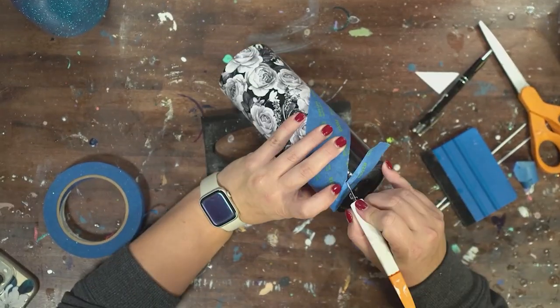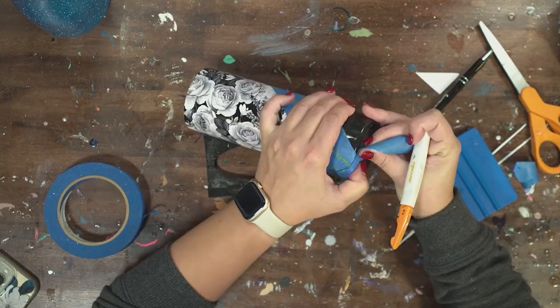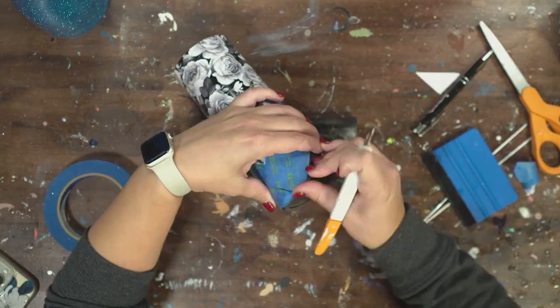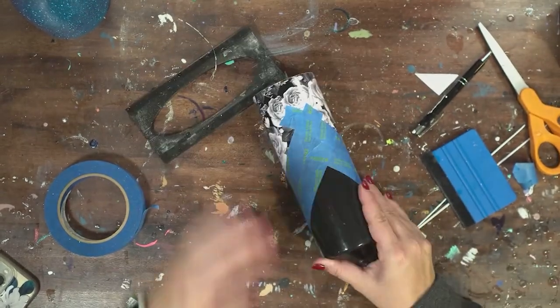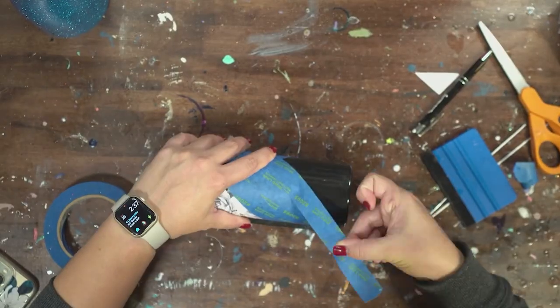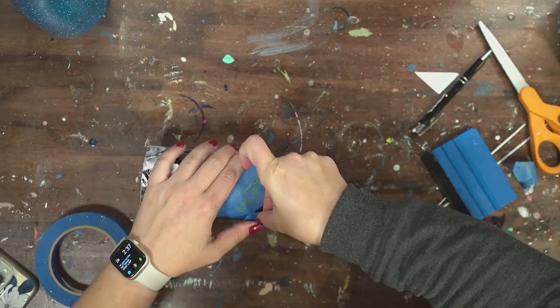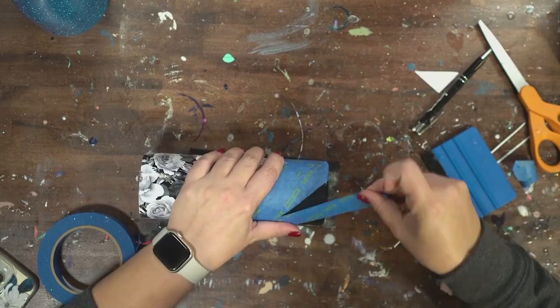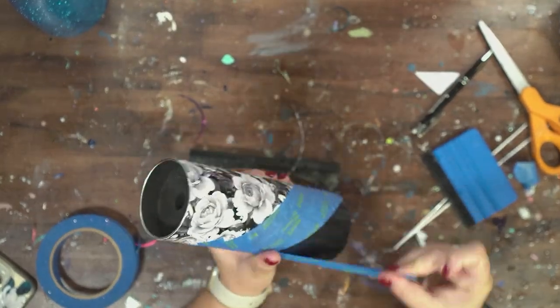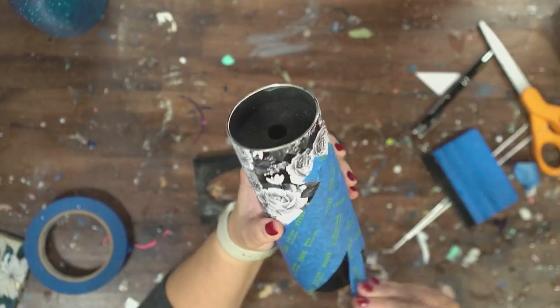I'm using one inch painters tape but it will look a little bit different if you're going to use a different size and where you place that original vinyl, but it's not that serious. Just go through and apply all of your strips till you get it totally covered along the bottom.